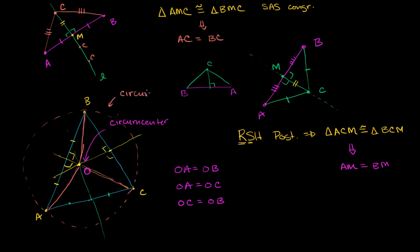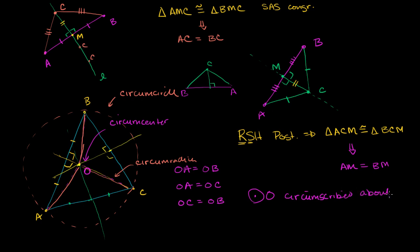What we've constructed here is called a circumcircle. And this distance right here we call the circumradius. We know we can construct it because there is a point here, and it is centered at O. And this circle, because it goes through all of the vertices of our triangle, we say that it is circumscribed about the triangle. So we can say that circle O is circumscribed about triangle ABC, which just means that all three vertices lie on the circle, and every point on the circle is the circumradius away from this circumcenter.